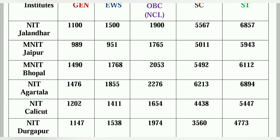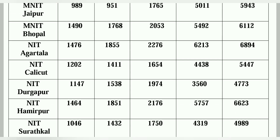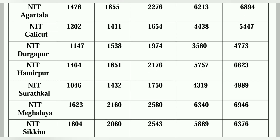This is a good institute — General rank around 1200, EWS is 1411, OBC NCL is 1654, SC is 4438, ST is 5447. NIT Durgapur closing rank: General is 1147, EWS is 1538, OBC NCL is 1974, SC is 3560, ST is 4773. Another NIT: EWS is 1473, OBC NCL is 2176, SC is 5757, ST is 6230. NIT General category 1046, EWS 1432, OBC 1750, SC 4319, ST 4989.